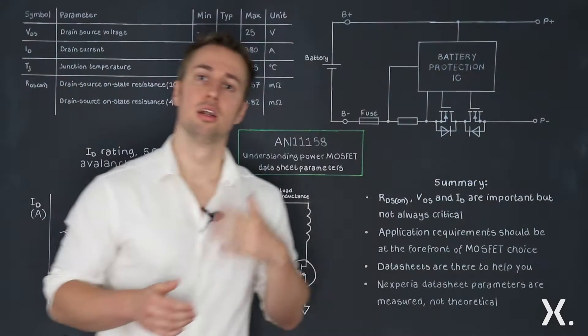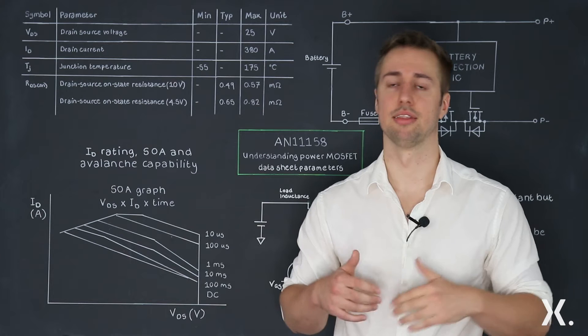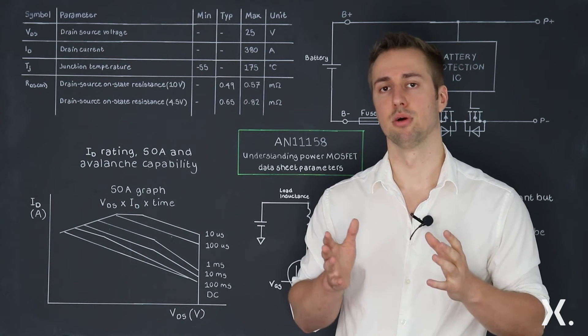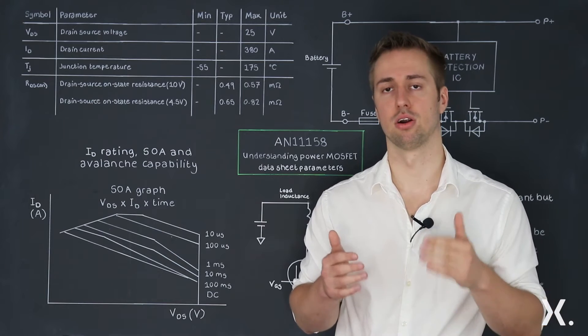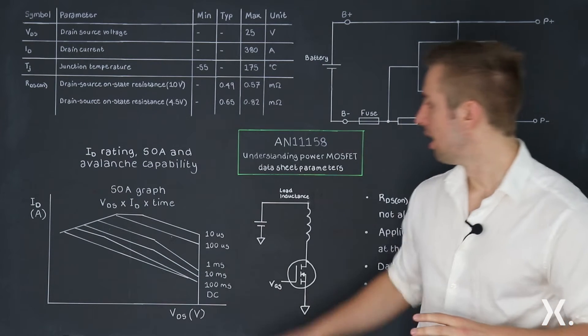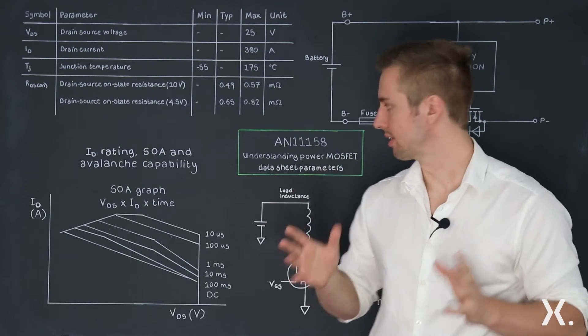During soft switching, you have a MOSFET being switched at a slower rate and they're in linear mode. Linear mode is where you have a drain source voltage across the MOSFET and you have a drain current flowing through the MOSFET. The safe operating area is what dictates and shows this effect.